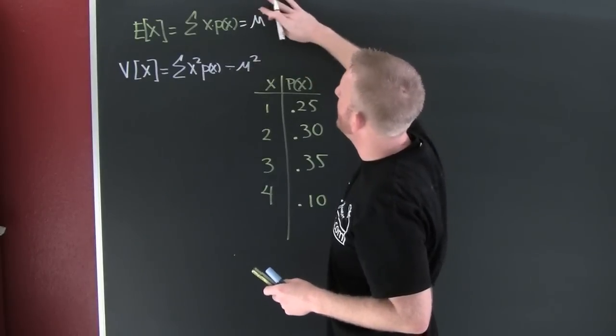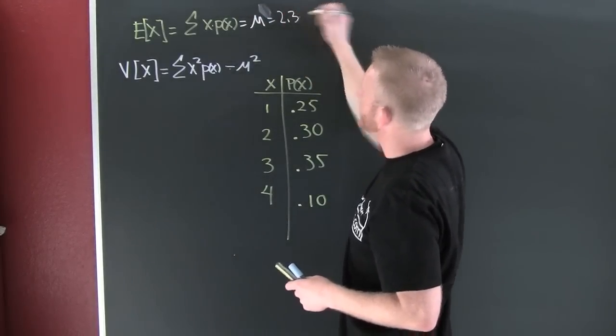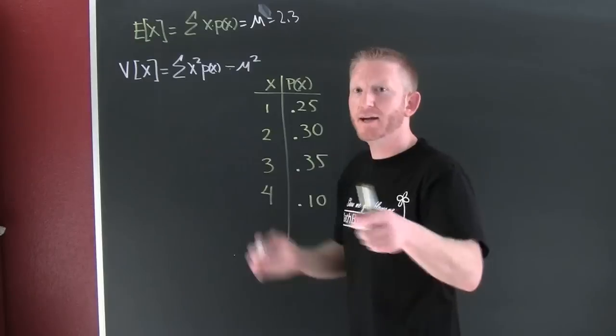In the previous problem, our mu turned out to be 2.3. Yeah! Fantastical. I think it was about babies. Yeah. Anyway, let's keep going.